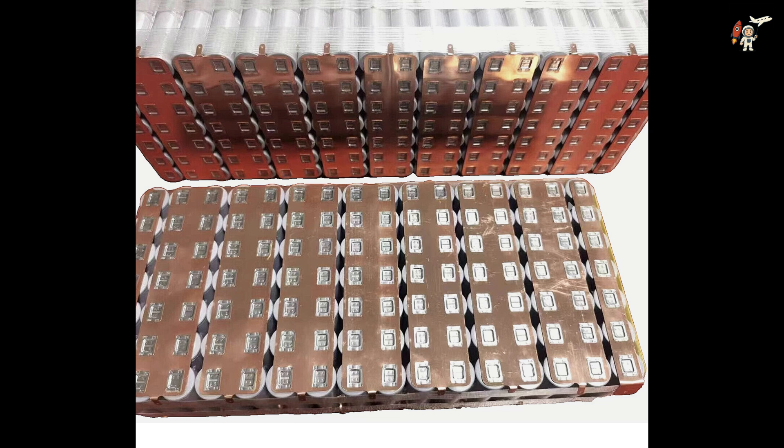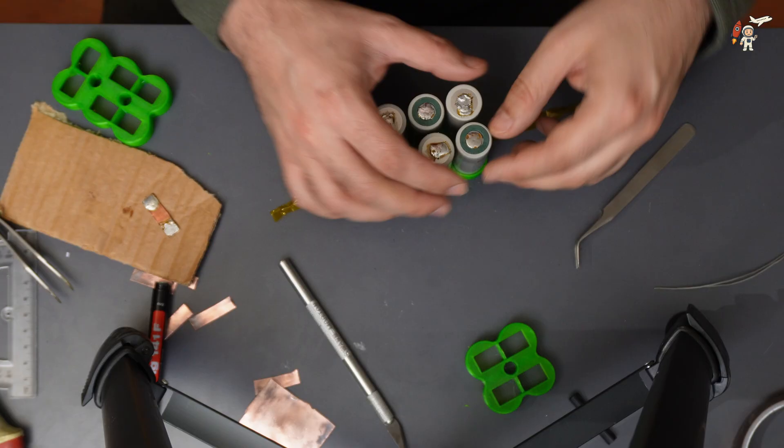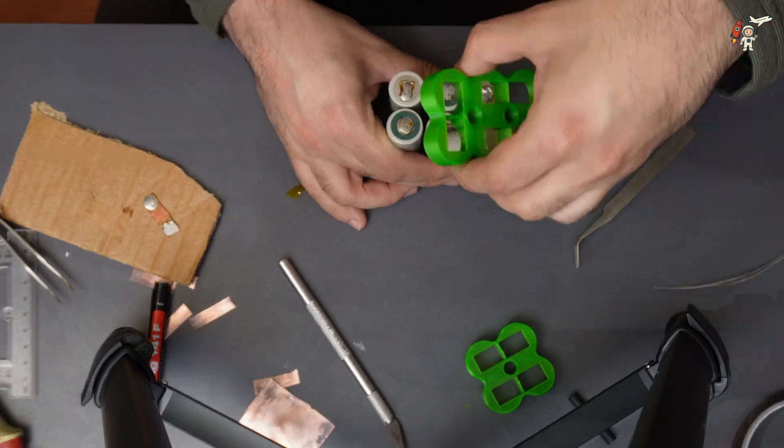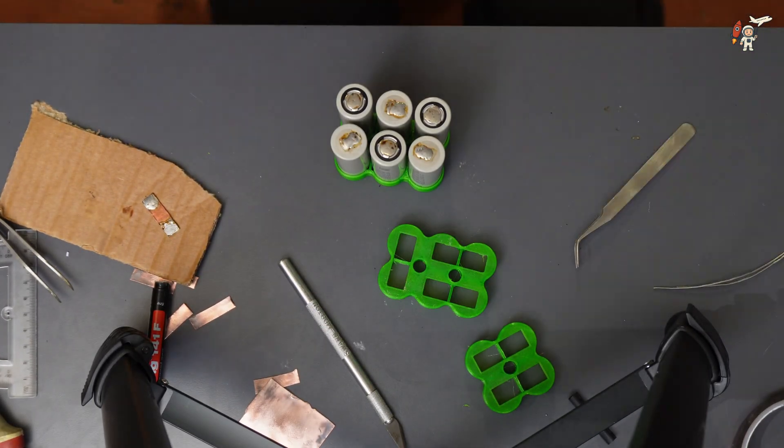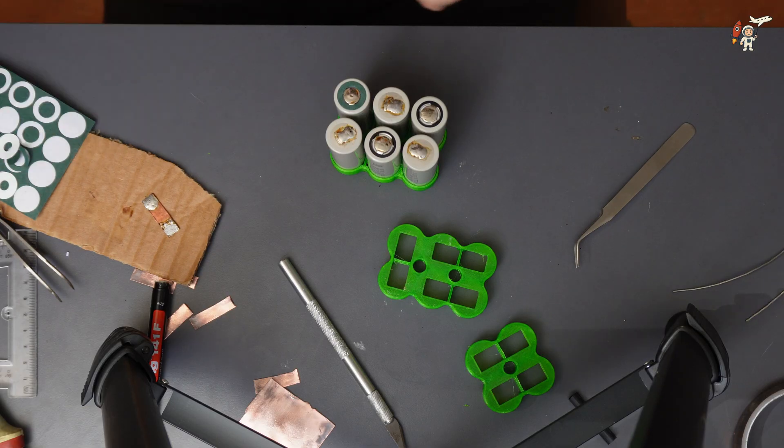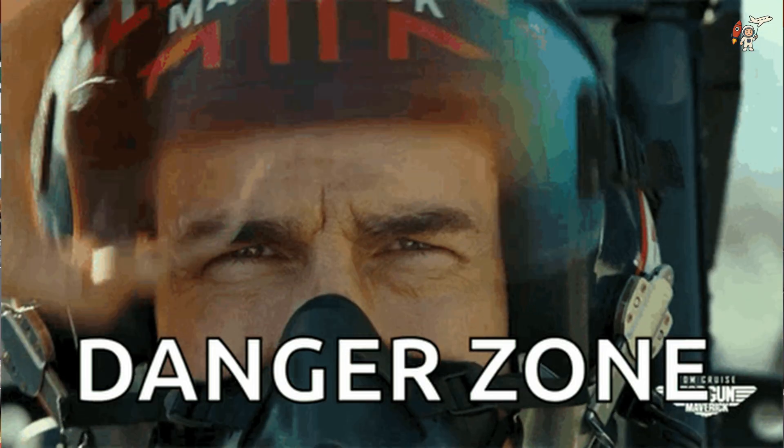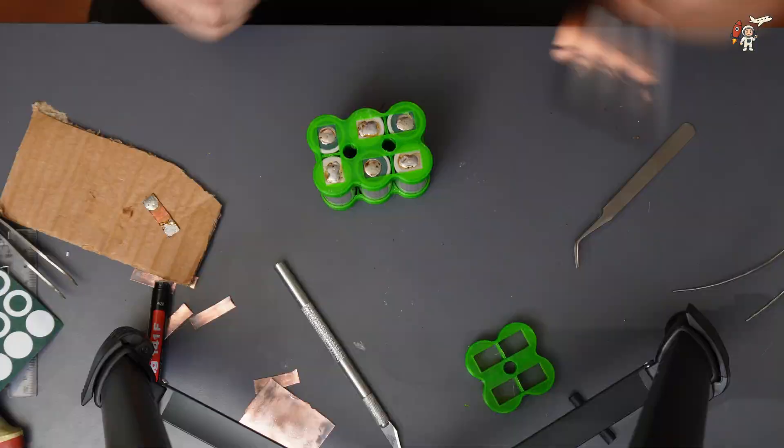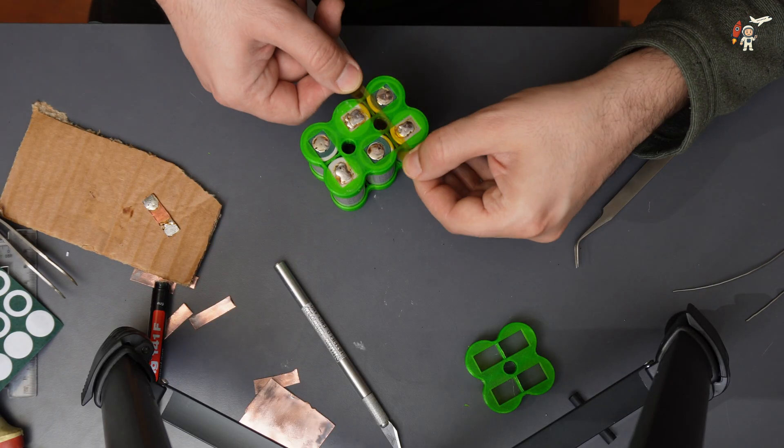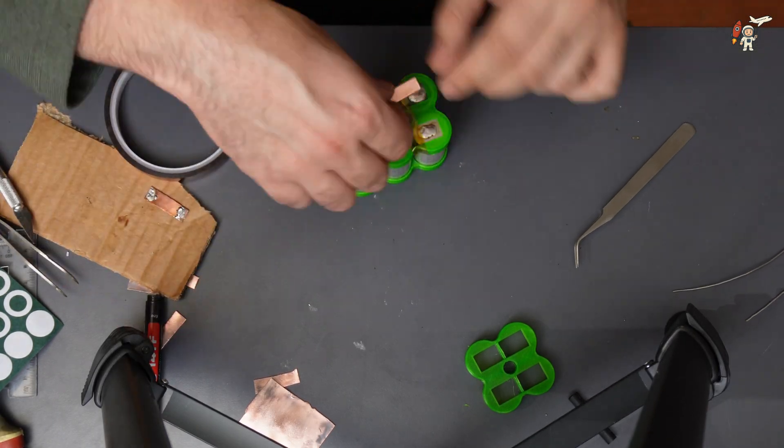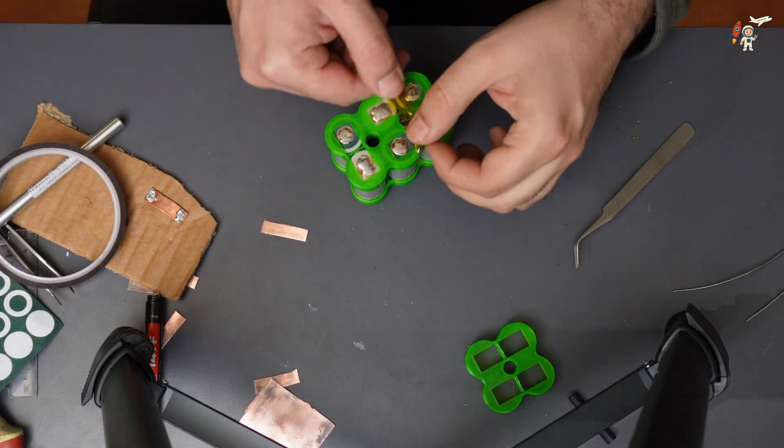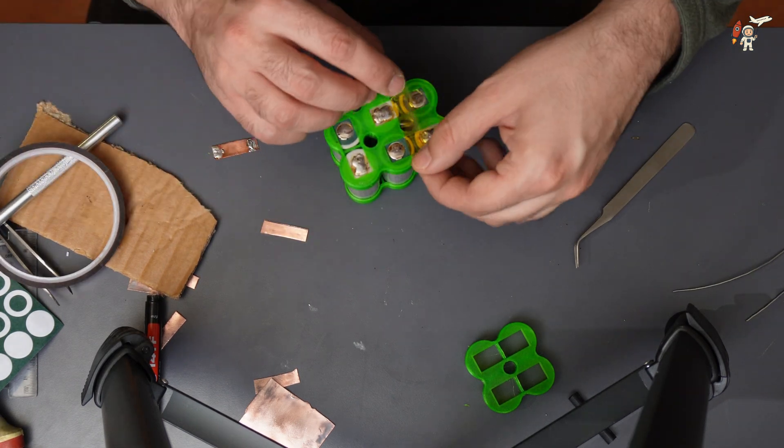The interconnection between the cells can be done using copper sheet in between the cells and use the spot welder to connect each individual cell to that main copper sheet. Now, the manufacturer of the cell like Samsung, LG, MOLYCELL, they all do not recommend to solder the cells. They recommend spot welding, but you can solder the cells if you know how to do it.